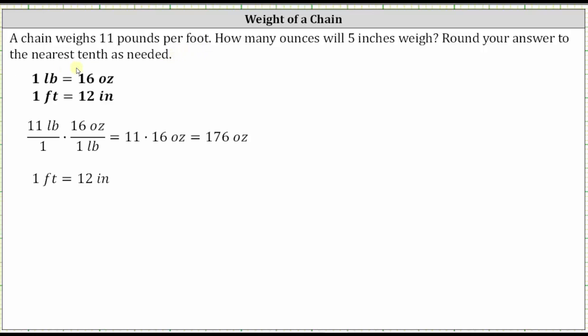To do this, we will use the conversions one pound equals 16 ounces and one foot equals 12 inches. So we know from the second conversion, one foot is equal to 12 inches.